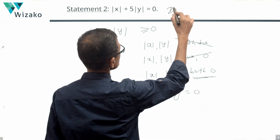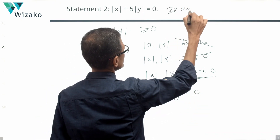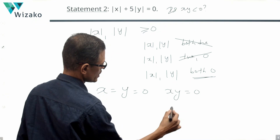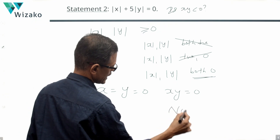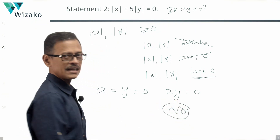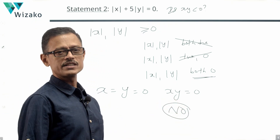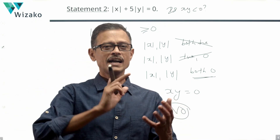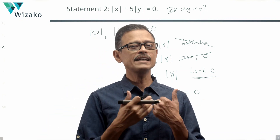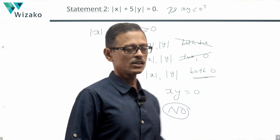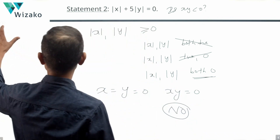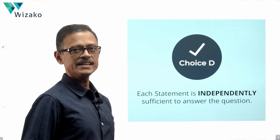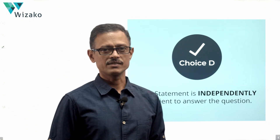The question is: is XY negative? If XY equals 0, it is not negative. We have a conclusive no from Statement 2 as well. Each statement independently gave us a conclusive answer, so both statements are independently sufficient. The answer is D.